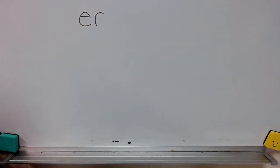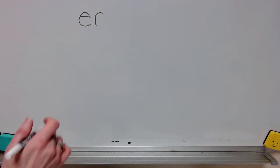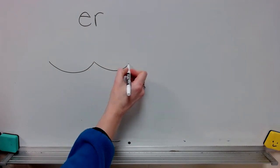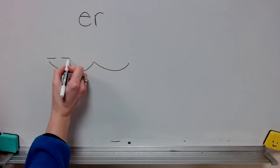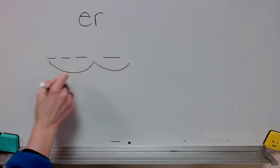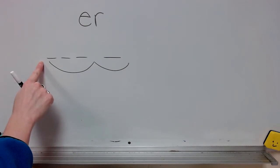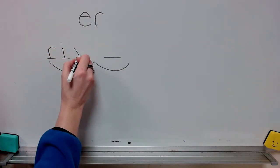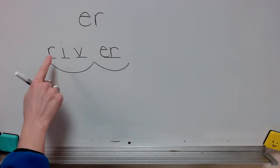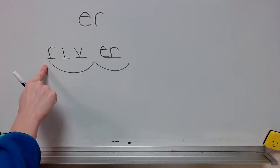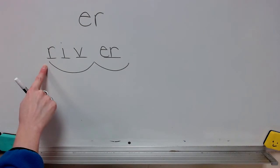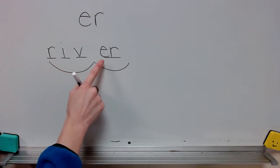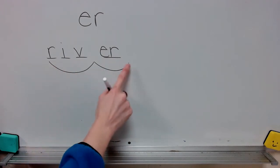The first word is river. What word? Let's break that into syllables: riv-er. Write the spelling for river. Check it and correct it. What word? Spell river. Word. Yes, river.